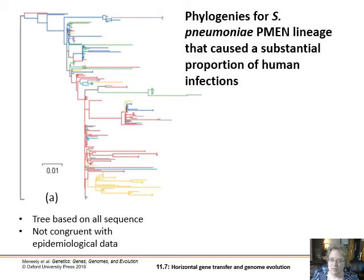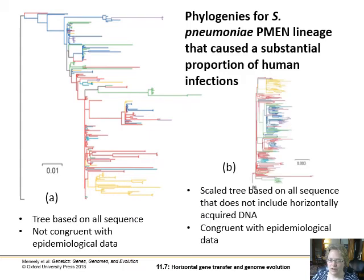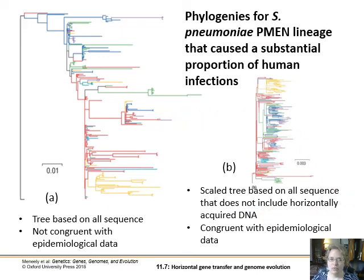In S. pneumoniae, here's a lineage with sequence data showing how different strains are organized — but you've got the same colors scattered throughout in ways that don't match up. A phylogeny based on pure sequence data actually doesn't line up with epidemiology and actual strain outbreaks. However, if you scale the tree using sequences that don't include horizontally acquired DNA, things line up and are concurrent with epidemiological data. In bacterial phylogeny, a lot of cleaning has to be done — you have to remove horizontally acquired DNA from the sequences you're analyzing in order to get a true phylogeny.